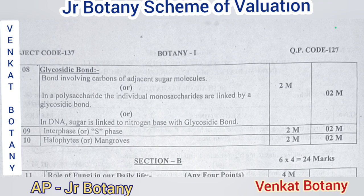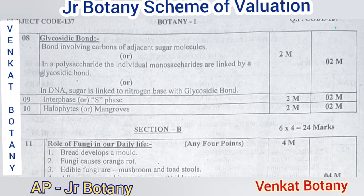The next question is: name the type of land plants that can tolerate the salinity of the sea. The answer is halophytes or mangroves. Halophytes are mangroves — it gives two marks.